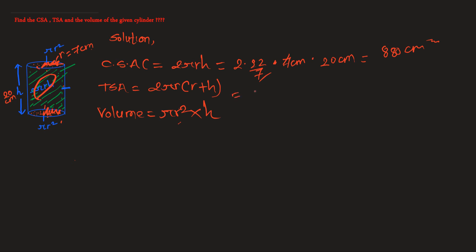If we replace the values — π as 22/7, r is 7, and h is 20 — and calculate it, we will get 1188 centimeters squared. This is how we get the total surface area.